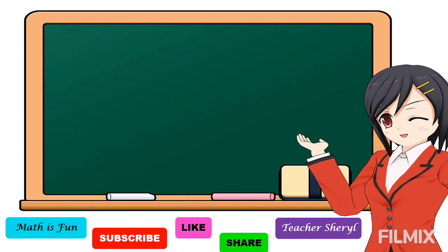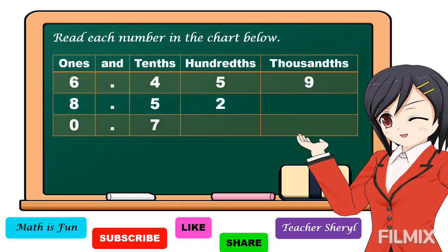To understand our topic better, we will have some examples. Read each number in the chart below. In reading numbers, we read from left to right. If there's a whole number, we read the whole number first. Then, the decimal point we read as AND. Then, for the decimal numbers, we read as if reading whole numbers. Then, we say the place value of the last digit.